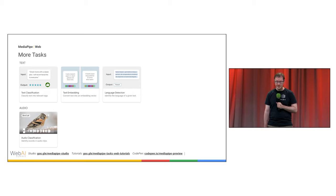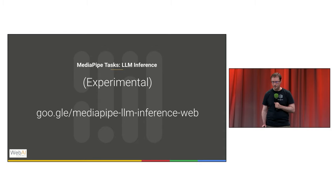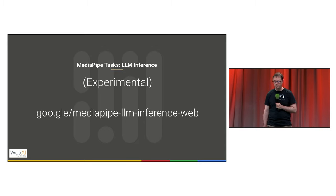However, in today's world of fast-paced GenAI breakthroughs, something's conspicuously missing here: GenAI. For our first forays into running large language models in the browser, we've been developing an experimental LLM inference API. Like our other MediaPipe tasks, this one is also cross-platform, although there are some more significant differences between web and non-web here.